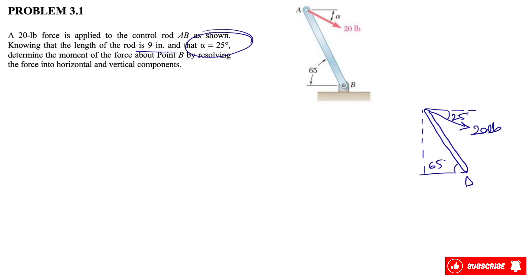So let's call our x and y in here. This will be the positive direction for x and y. All we need to do is to find the x and y component of this force. We know the x component will be 20 times cosine of 25 degrees, and the y component of the force will be 20 times sine of 25 degrees.